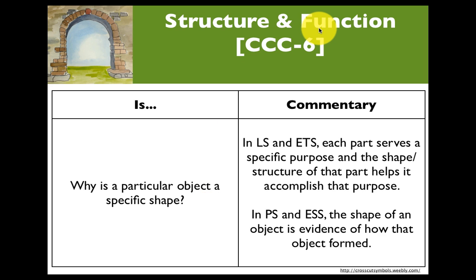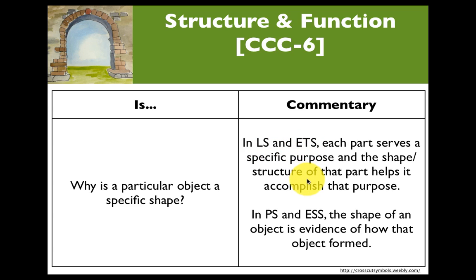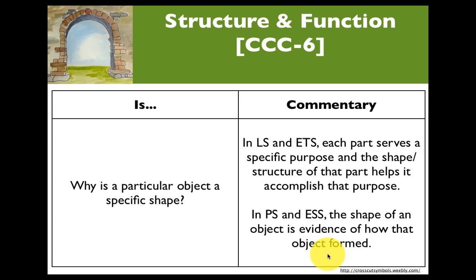Structure and function is a phrase used in a lot of biology classes, but it actually applies to all types of science. It really boils down to: why is a particular object a specific shape? In life science and engineering, each part usually serves a specific purpose, and the shape or structure of that part helps accomplish that purpose. In physical science and earth and space science, the shape of an object is actually evidence of how that object formed, or of the processes that are currently shaping it.